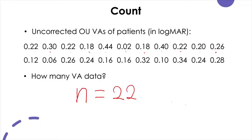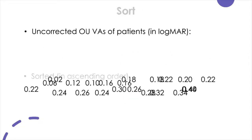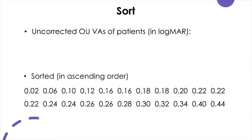After you count the number of data, you want to actually sort this out because this dataset is pretty much randomly organized. If we sort in ascending order — from the smallest value to the largest value — then now we can find out what the smallest one is.